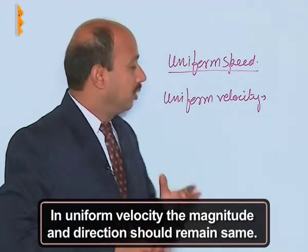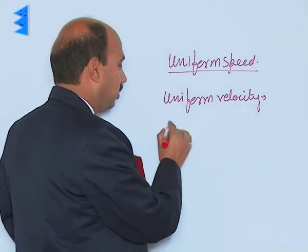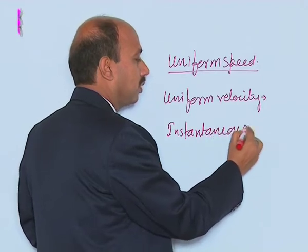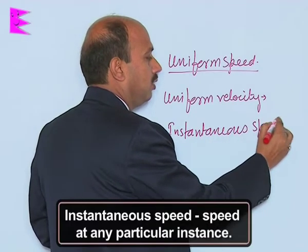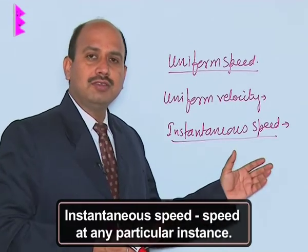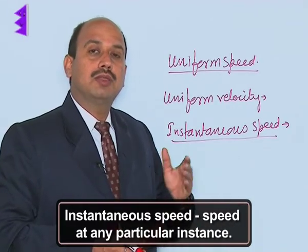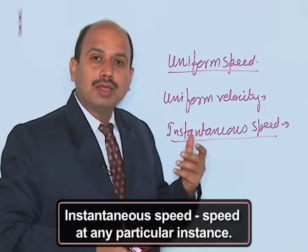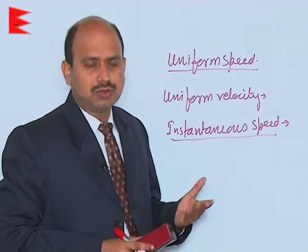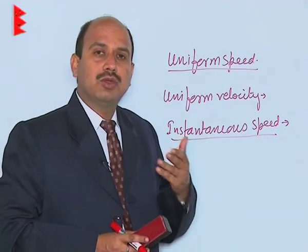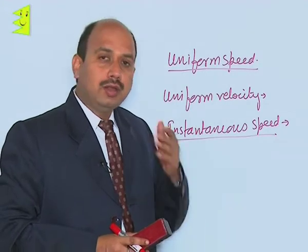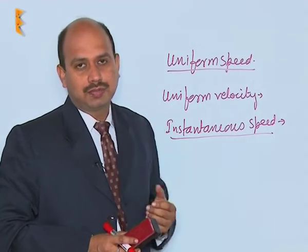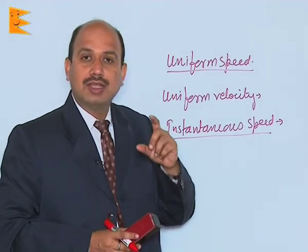Now we will come to instantaneous speed. The word itself gives the meaning — instantaneous speed means speed at any particular instant, at any particular time. So the speed of the body at any instant is known as instantaneous speed. Suppose you are travelling large distances, 100 kilometers or 50 kilometers, driving at different speeds — the speed shown by the speedometer of the car is known as instantaneous speed.